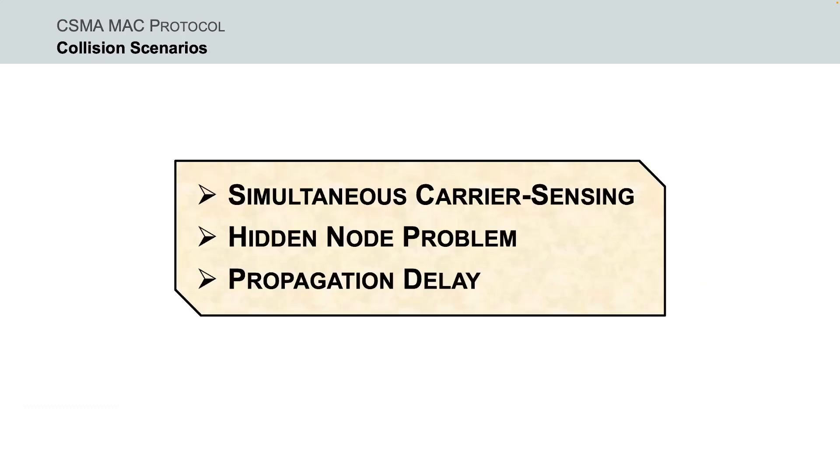The last scenario is related with the propagation delay. Indeed, when a node transmits a frame, it still takes time, although very short, for the first bit to reach every node within the radio propagation and for every node to sense it. In other words, a node may sense the medium and find it idle only because the first bit sent by another node has not yet been received.